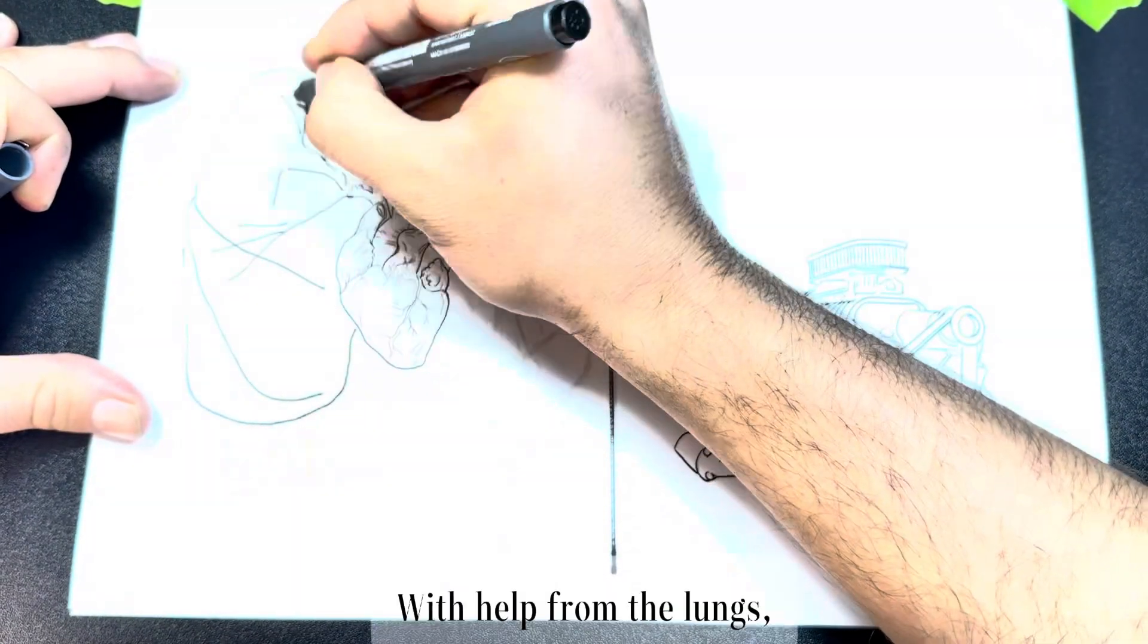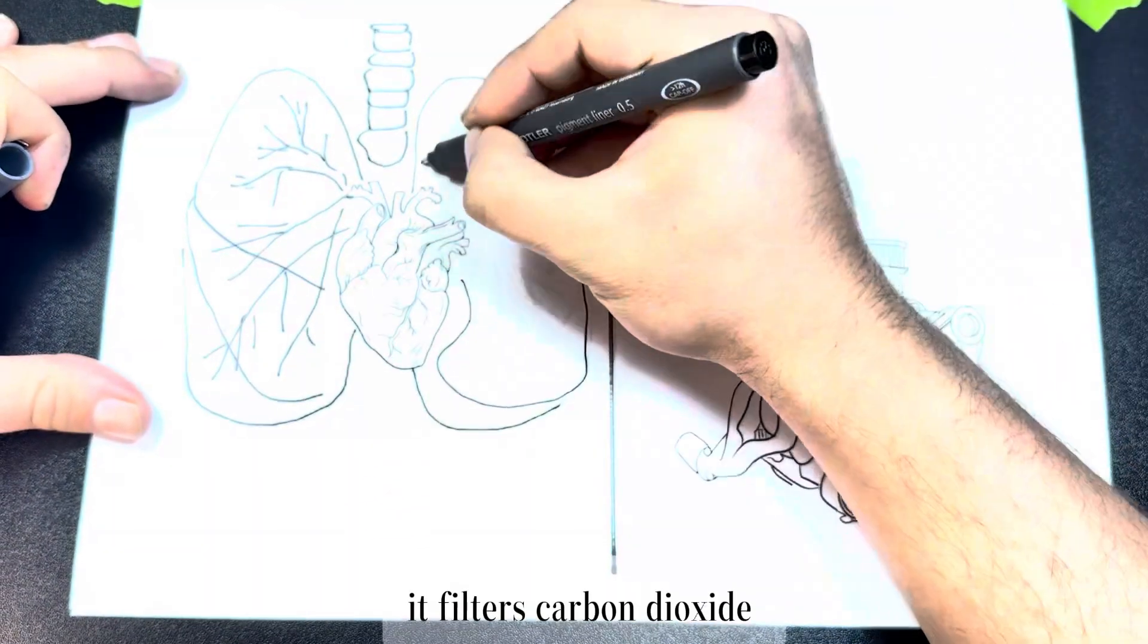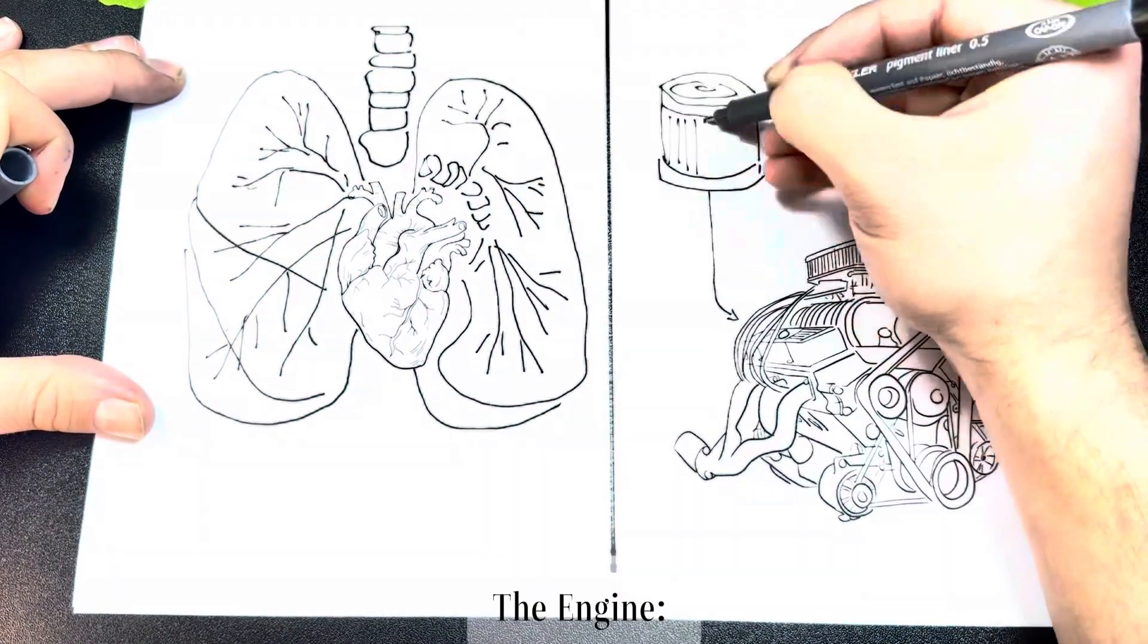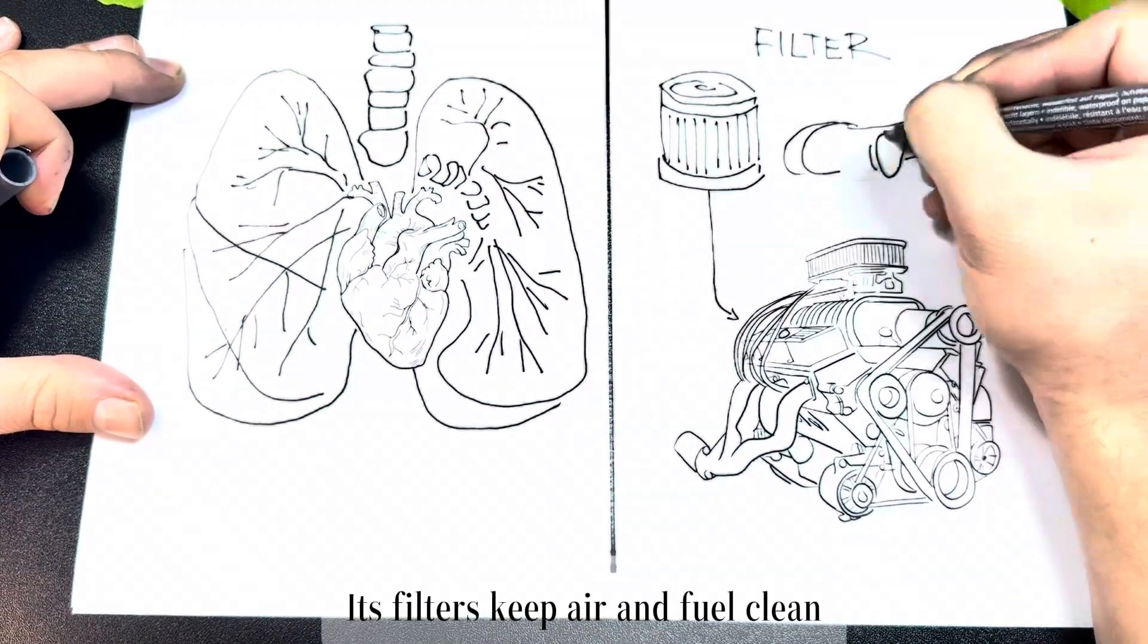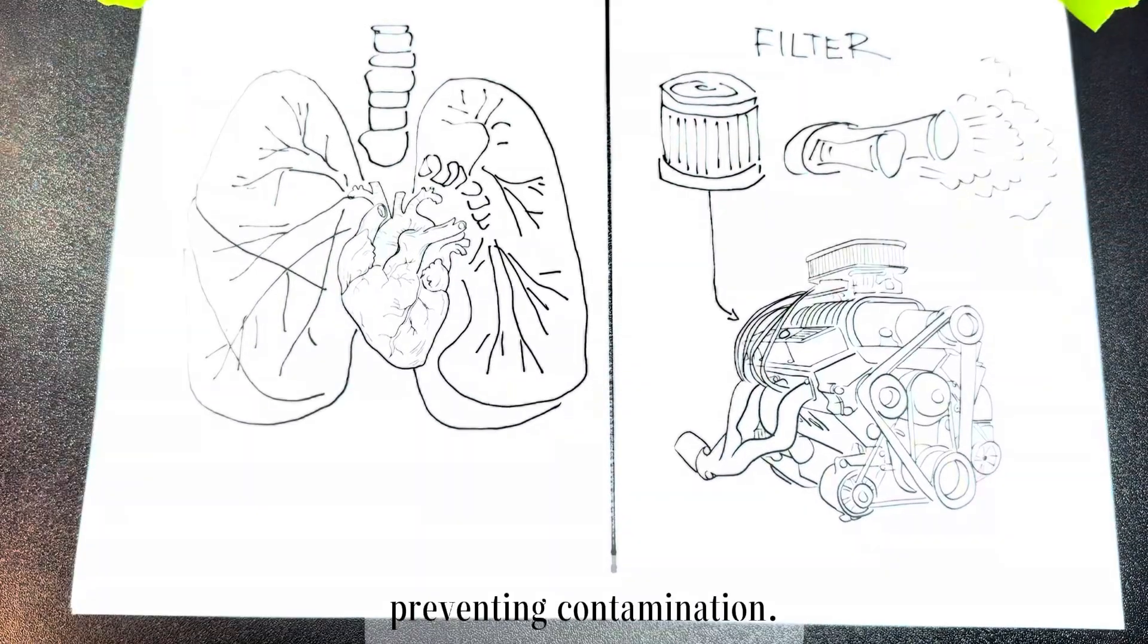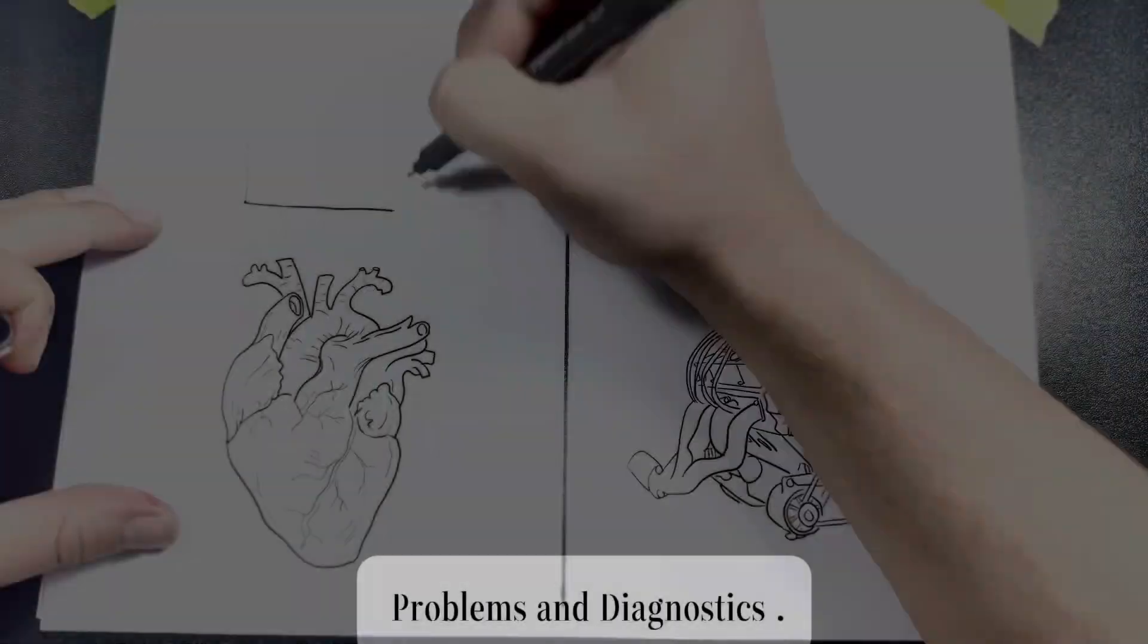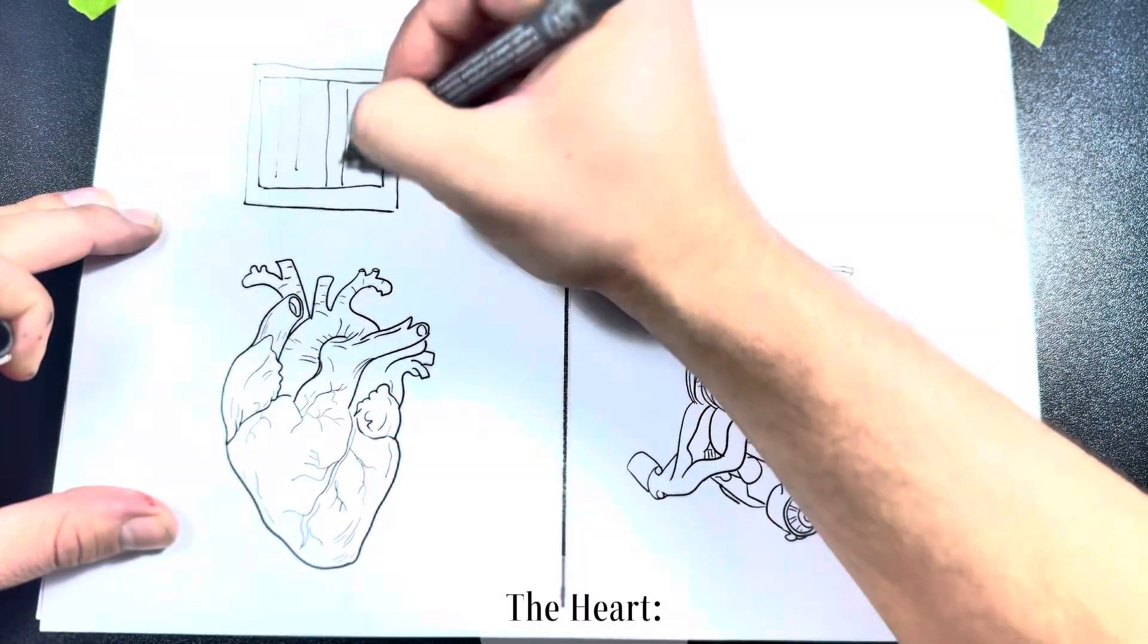Filtration: The heart, with help from the lungs, filters carbon dioxide and enriches your blood with oxygen. The engine's filters keep air and fuel clean, preventing contamination. Both systems need clean inputs to work efficiently.